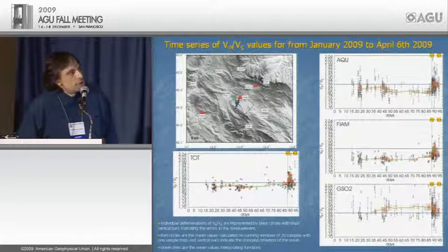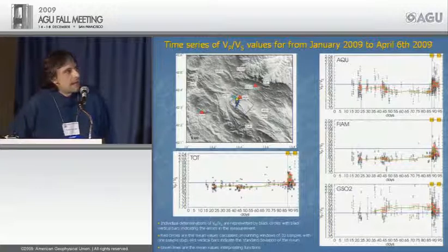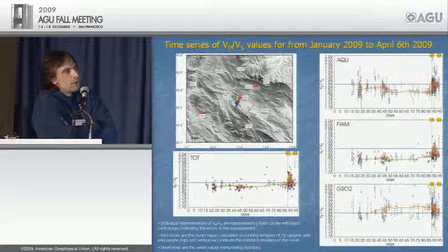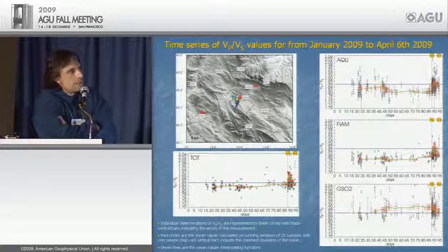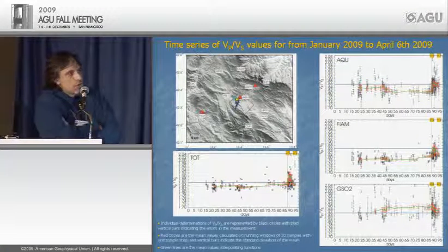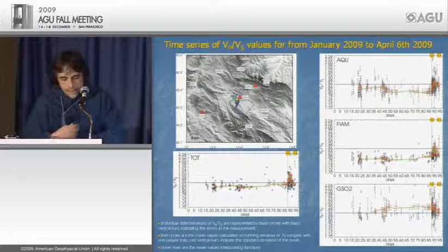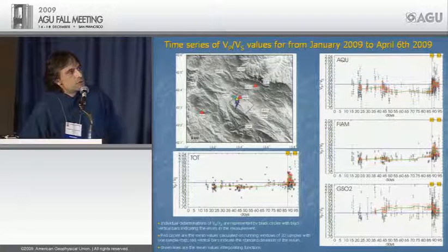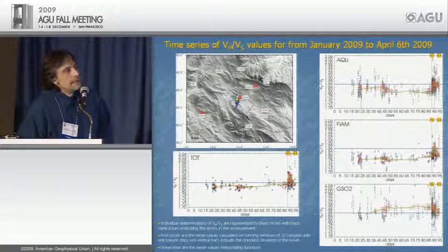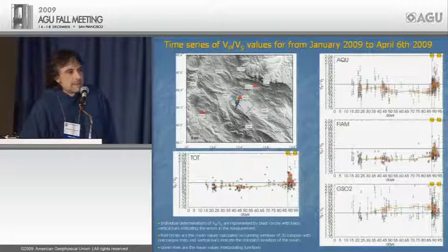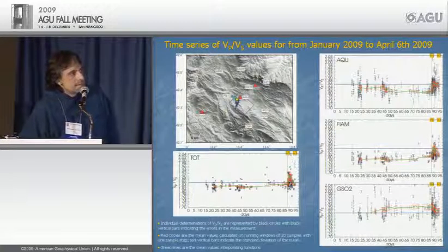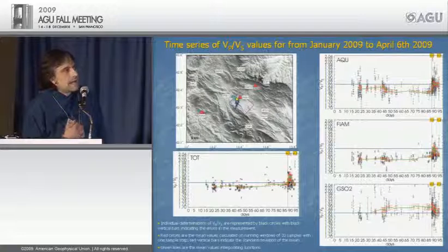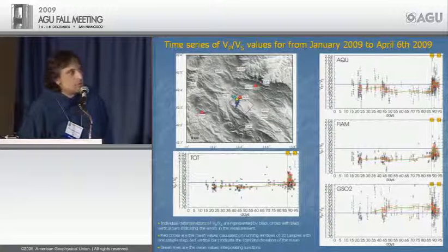The outstanding feature in all four time series is a sharp change in VP/VS value on March 13 — the time of the largest magnitude foreshock. On average in the epicentral area, VP/VS rises from 1.85 to 1.92, then decreases again to 1.85 in the seven following days before the main shock. A similar behavior is observed at stations Haku and Fiam on the hanging wall of the fault, while station GSO2 on the footwall shows an opposite trend — VP/VS is very high already from January to March, then drops to 1.86 on March 13.